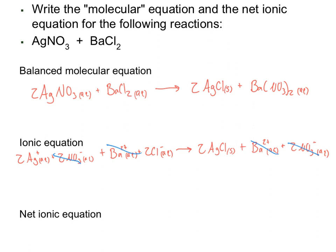Now we're ready to write out our final net ionic equation. We have our two Ag+ reacting with our two Cl- to form two AgCl in the solid form. Finally, we can reduce this down further — we have two Ag+, two Cl-, and two AgCl, so we can divide through by two to get the simplified final net ionic equation: Ag+ (aq) + Cl- (aq) → AgCl (s).